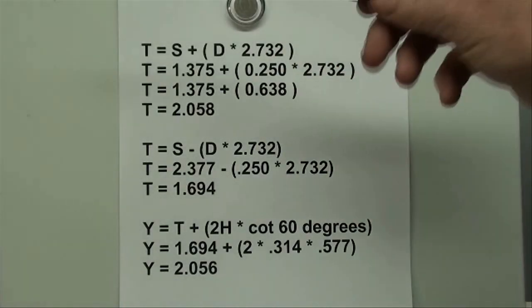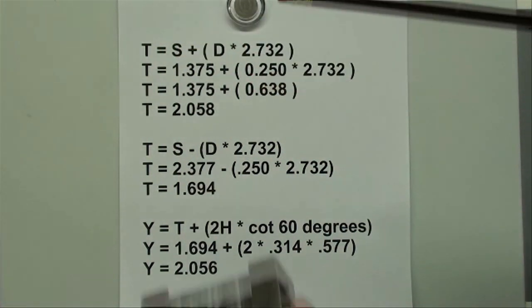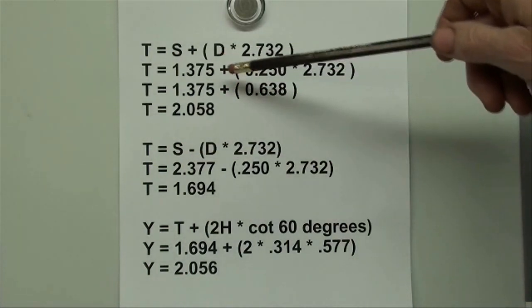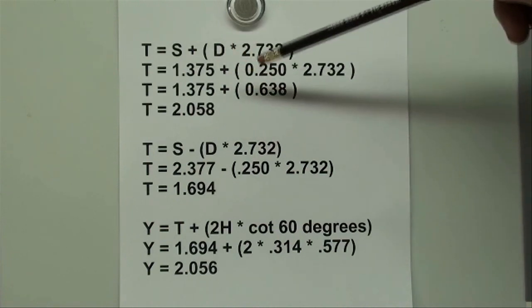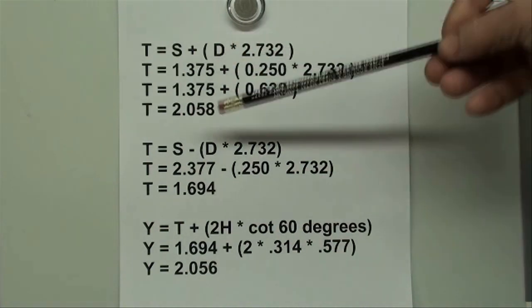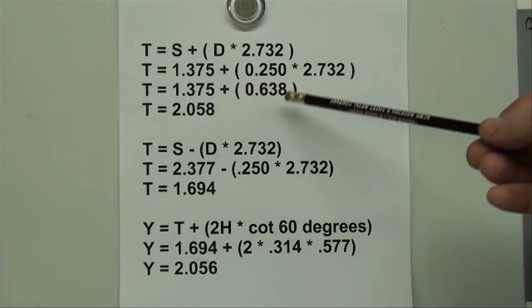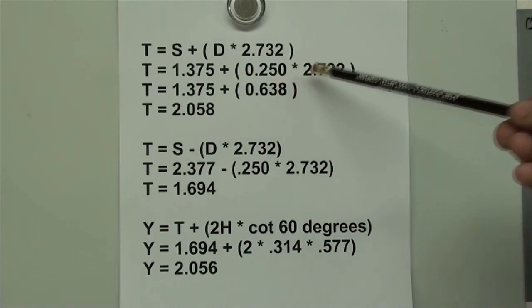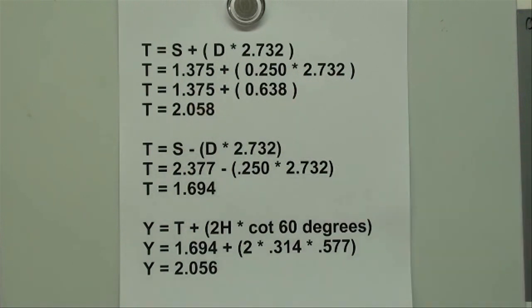To find T on the female, which is right here, we use this formula: T equals S plus, in parenthesis, the diameter of the pins, which were quarter inch, times that constant. So in the next step it's 1.375 plus what we have in the parenthesis - the diameter times the constant. Then we've done a little math here and the final answer is T equals 2.058.